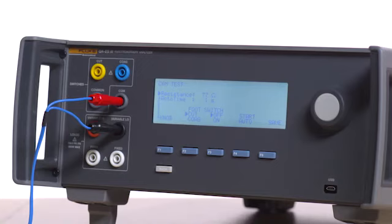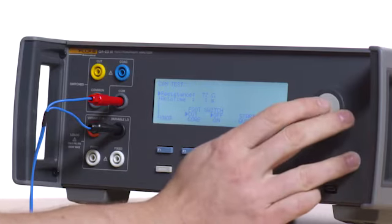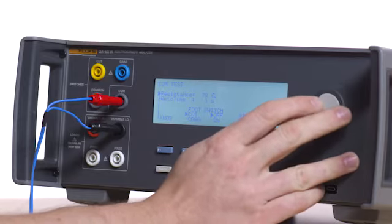Slowly increase the resistance in 1 ohm increments until the REM alarm sounds. The alarm should sound between 77 and 91 ohms.